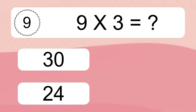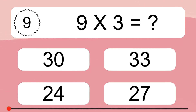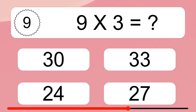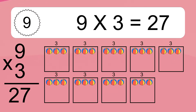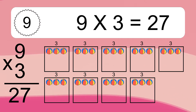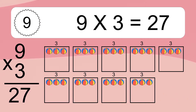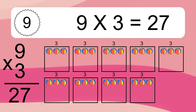9 times 3 equals what? 9 times 3 equals 27. We have 9 boxes and each box has 3 colorful balls inside. If you count all the balls in all the boxes together, you will have 9 times 3 balls. This equals 27 balls.